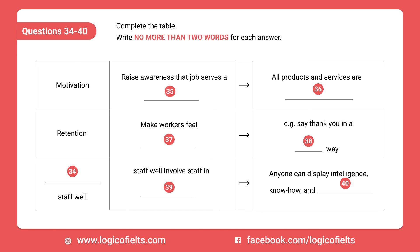Before you hear the rest of the lecture, you have some time to look at questions 34 to 40. Now listen and answer questions 34 to 40. So, what is soft HRM? It basically involves three elements. One is motivating your staff. The second is making sure they stay with your company — that is, reducing turnover. Remember, turnover costs money, diverts resources, disturbs the system, and you may be losing a lot of experience in just one staff member. The third element is using the staff in the best way — in a way that gets the most out of them. All of these elements are closely related and sometimes overlap, but are still distinct enough to be considered separately.